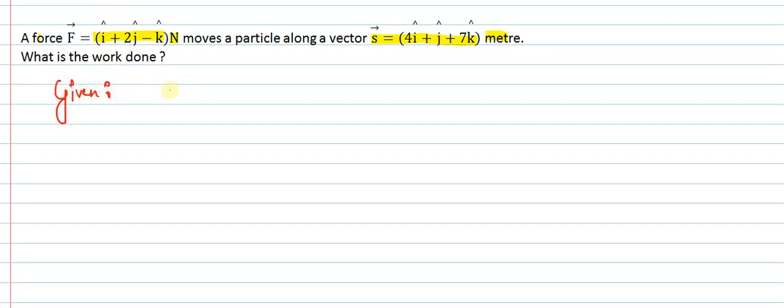Okay, so let's write down the given things. Firstly, we have been given that joh force laga hai woh hai i cap plus 2j cap minus k cap and joh displacement hua hai woh hua hai 4i cap plus j cap plus 7k cap. हमें क्या निकालना है हमें पता लगाना है इस case में work कितना हुआ है, what is the amount of work.